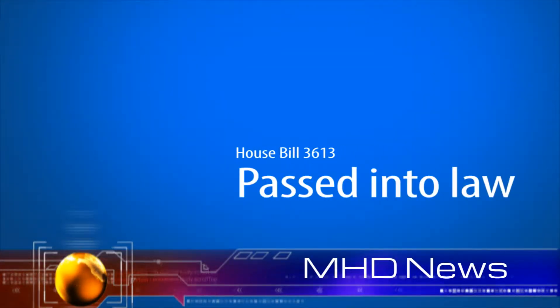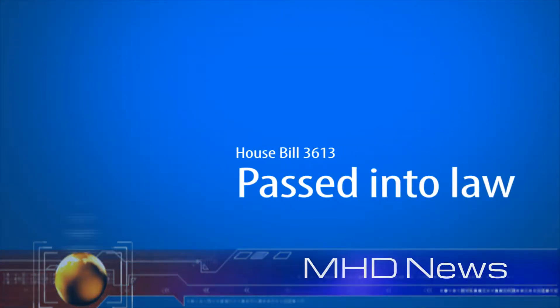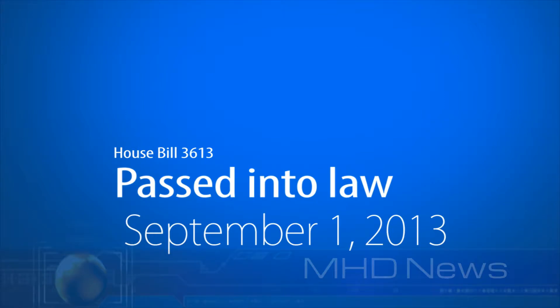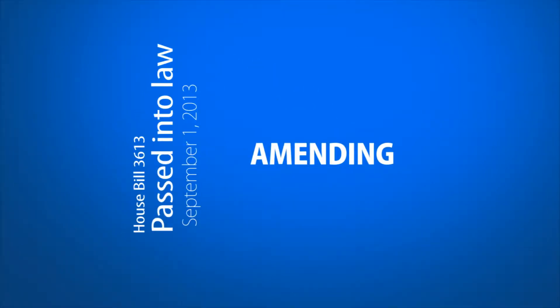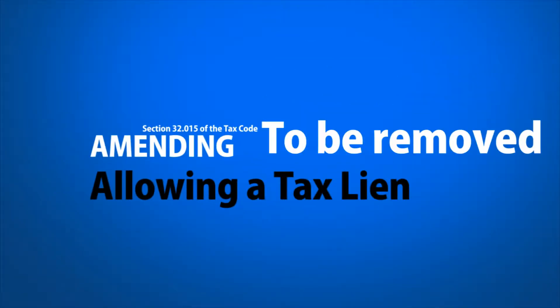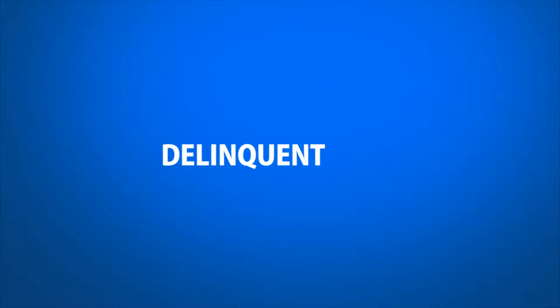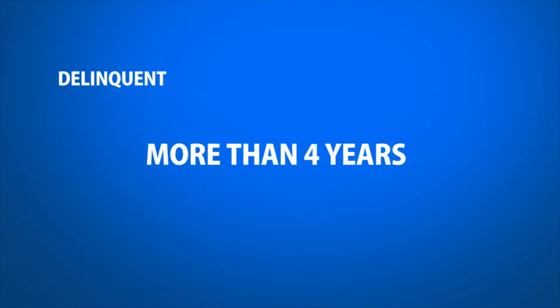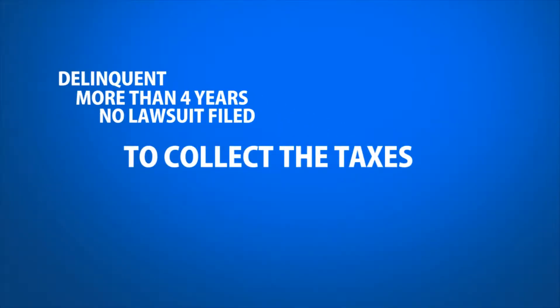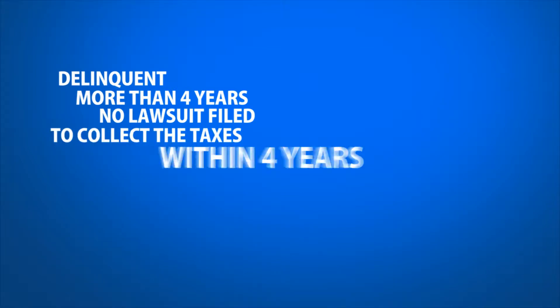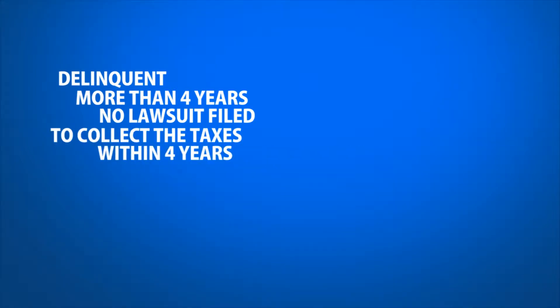House Bill 3613 passed into law and became effective September 1, 2013. This law amends section 32.015 of the tax code, allowing a tax lien to be removed from the title records of a manufactured home if it has been delinquent for more than four years and there has been no lawsuit filed to collect the taxes in question within the four-year time period.